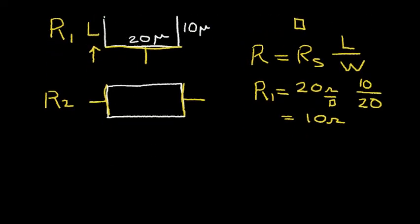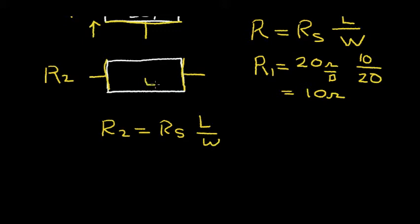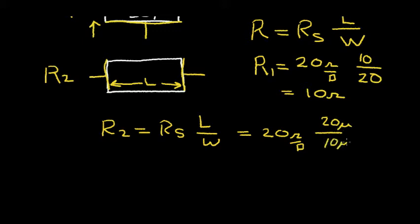Let's do the same for resistance R2. R2 is equal to the sheet resistance times the number of squares, length over the width. Here the length is this dimension — this is the direction that the current flows. So in this case, we have 20 ohms per square times the length, which is 20 microns, divided by the width, which is 10 microns. So here I have two squares, and each square is worth 20 ohms of resistance. So R2 is 40 ohms.